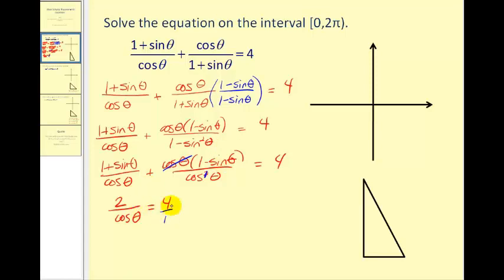Now to solve this equation for cosine theta, we may want to perform cross products. So four cosine theta equals two. Dividing by four, all this comes down to where is cosine theta equal to one-half.